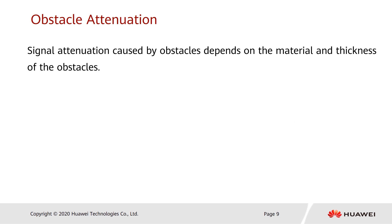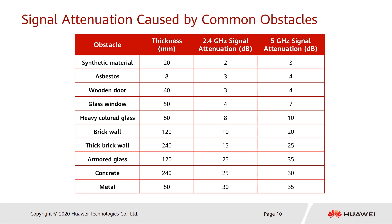Signal attenuation caused by obstacles depends on the material and thickness of obstacles. Common obstacles include synthetic material, asbestos, wooden door, glass window, heavy colored glass, brick wall, thick brick wall, armored glass, concrete, and metal — with attenuation increasing from top to bottom. The brick wall is the most common obstacle. For obstacles with higher attenuation than brick wall, signals generally cannot penetrate them. For obstacles with lower attenuation, such as wooden doors, signals can pass through for coverage.